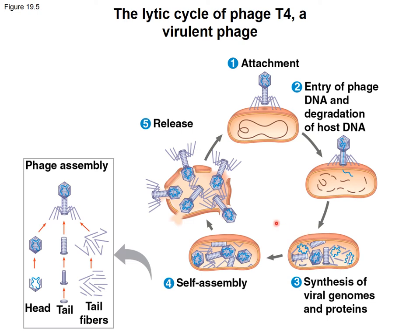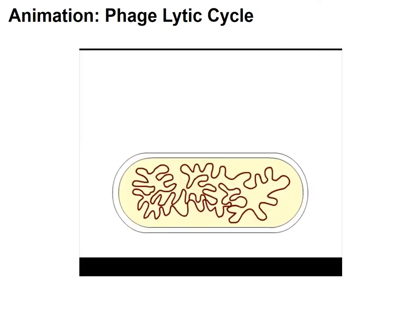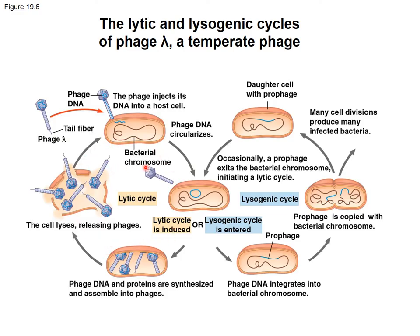This relates to horizontal gene transfer that we discussed previously — it's a way in which genes from bacteria and the phage can be transmitted between other bacteria. The temperate phages are examples of phages that can undergo horizontal gene transfer. When phages can perform both lytic and lysogenic phases, the phage DNA can be injected and incorporated into the host genome — this is the lysogenic cycle.